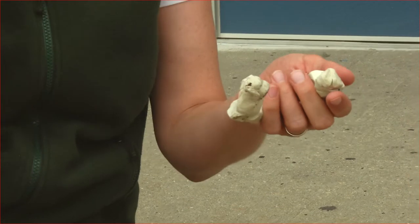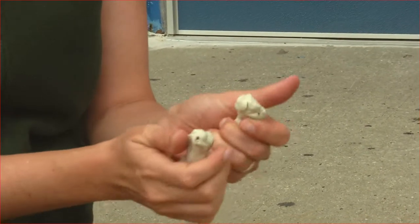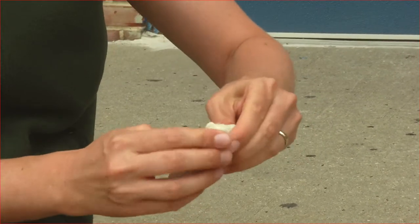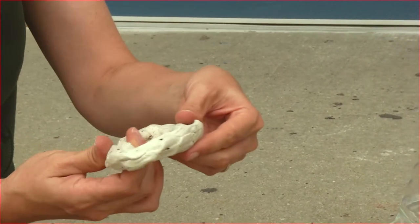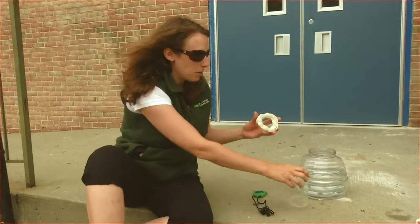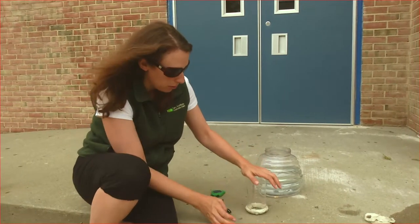Now we're going to test the impervious surfaces of the schoolyard. You can do this using the same protocol except you need to create a seal with some modeling clay in place. We're going to press it onto our impervious surface, pressing the clay around the bottom.